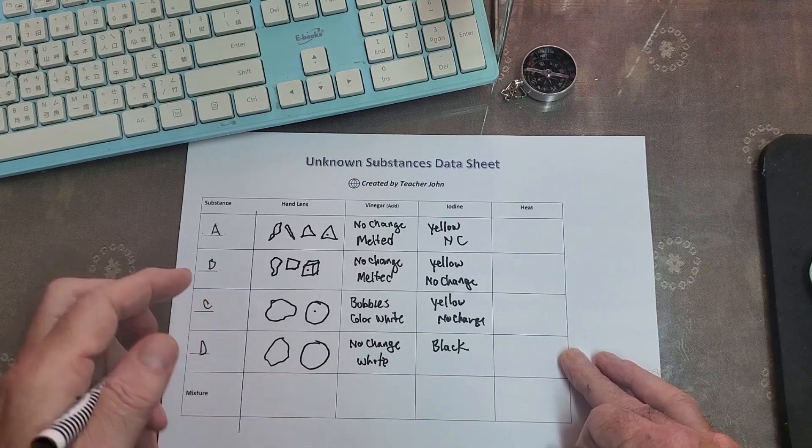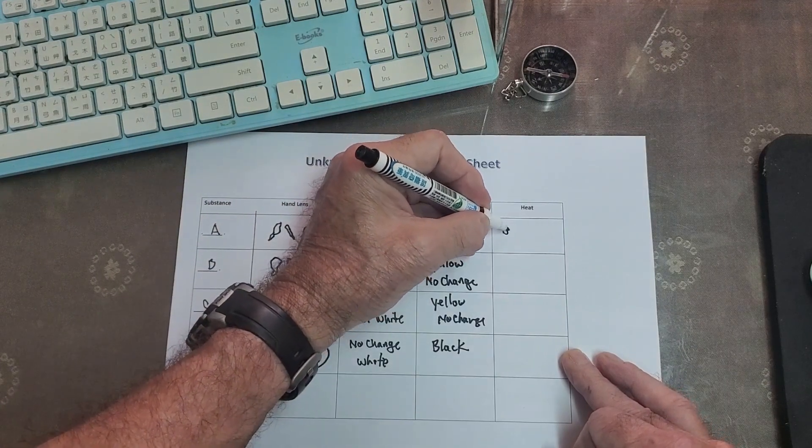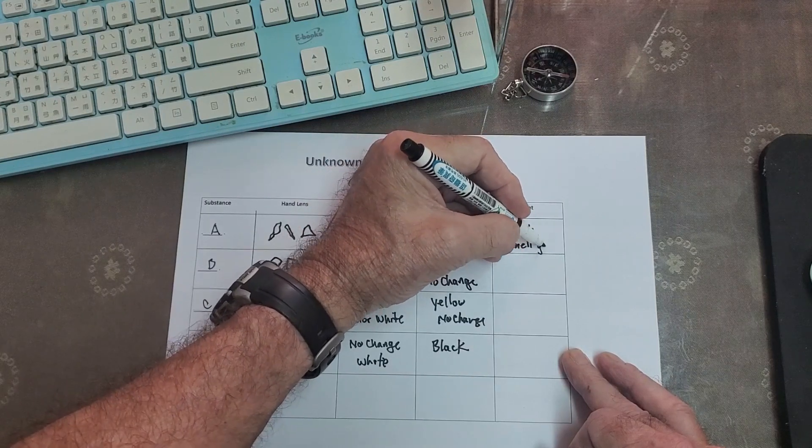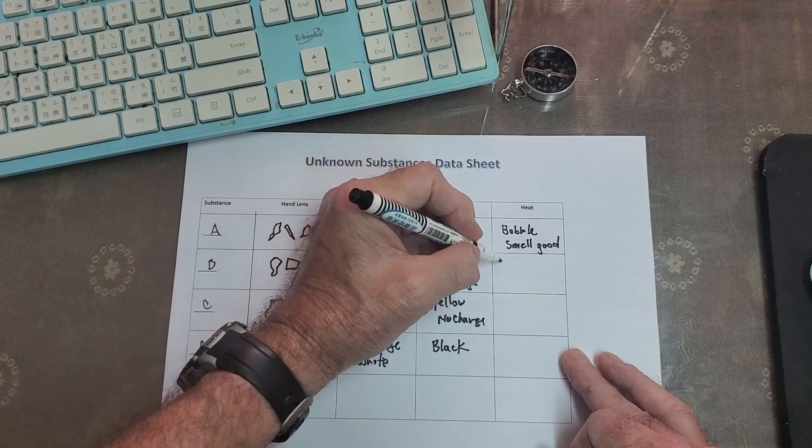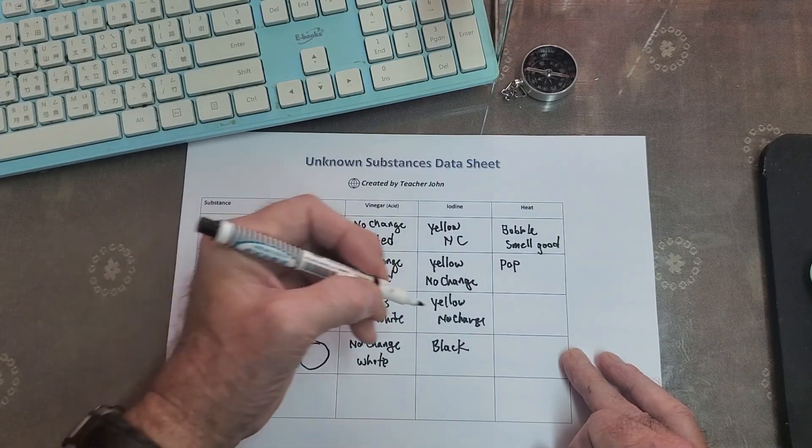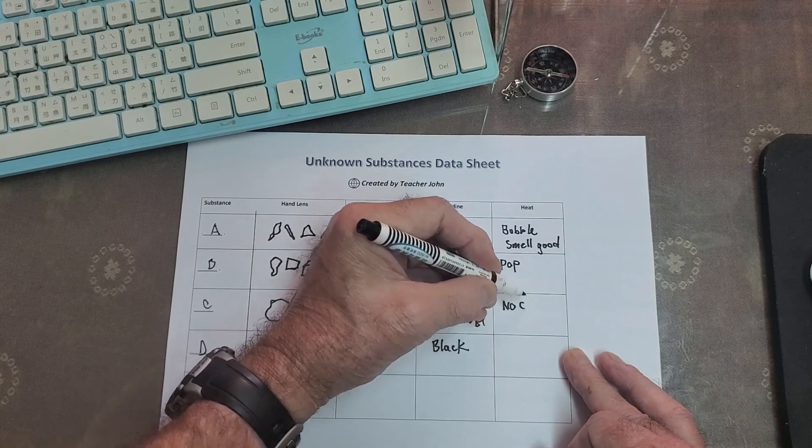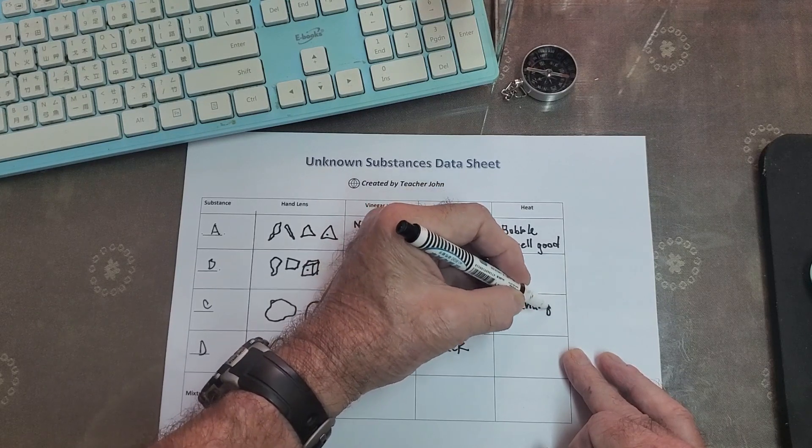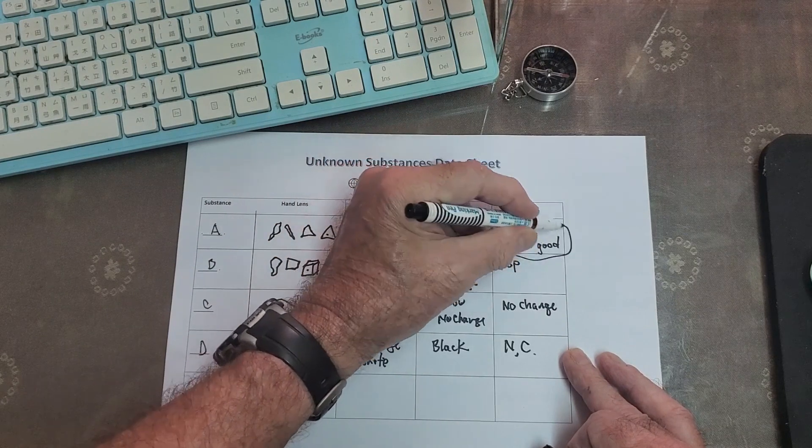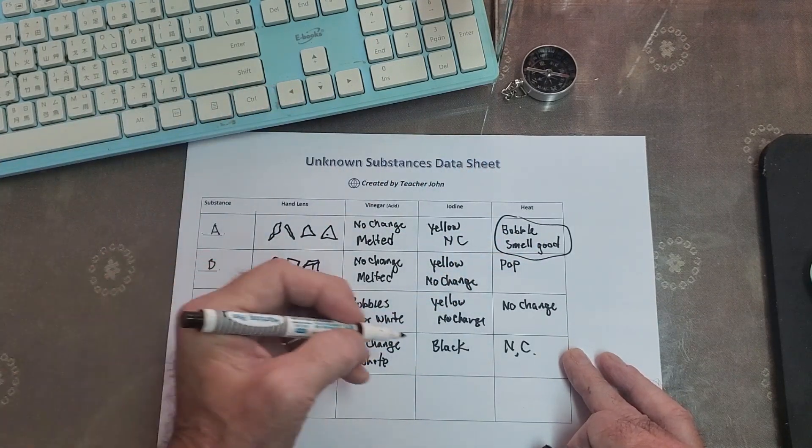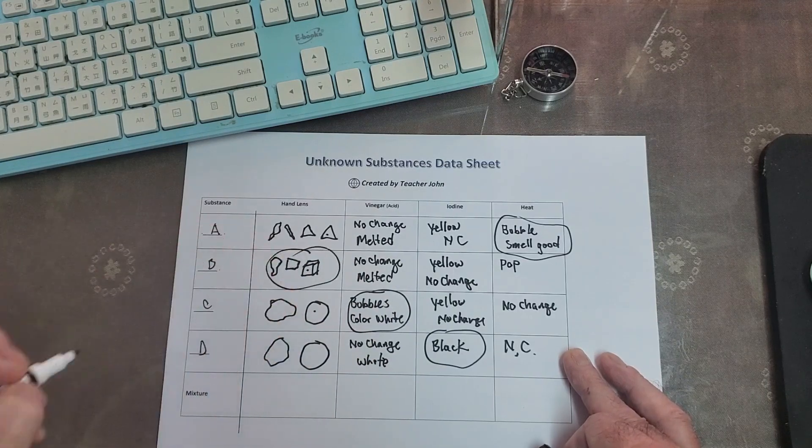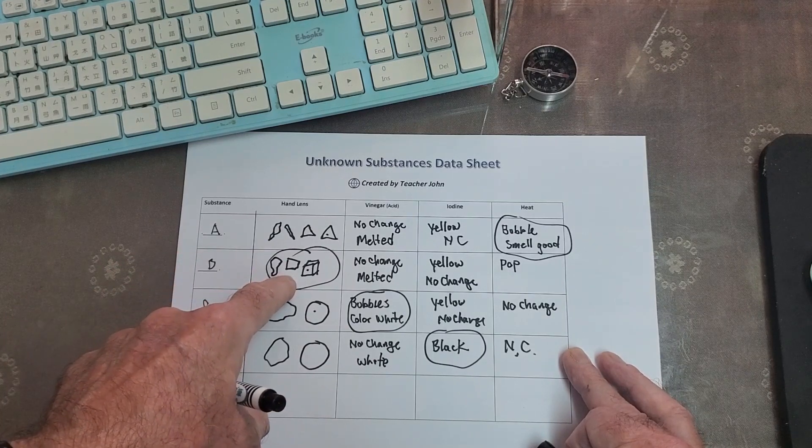Heat test. We didn't do. I can tell you that A, does under fire in a foil will bubble. And smell good. B, might pop. So safety goggles are needed for this. But really, no change, no color change. And really, no change for C or no change for D. So really the keys here are the heat test here. For the iodine test this is the key and this is the key. And the shapes.